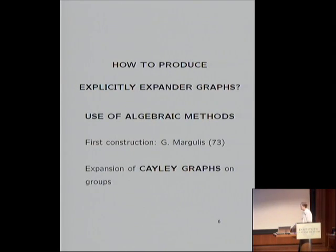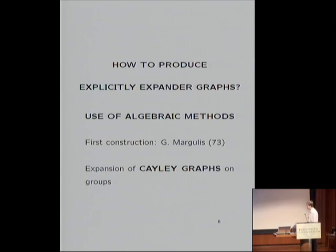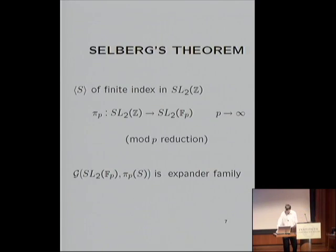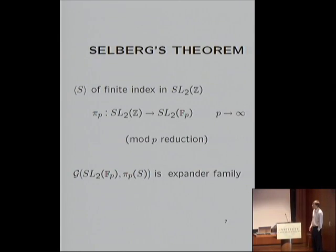What if you do not have access to true randomness? If you don't have access to randomness, you try to rely on pseudo-randomness. One of the best sources for pseudo-randomness is to exploit algebraic structure. Explicit expander graphs were introduced with algebraic constructions by Margulis. In general, a natural source of graphs coming from algebra are Cayley graphs on groups. There is one quite significant result in this respect: the theorem of Selberg.